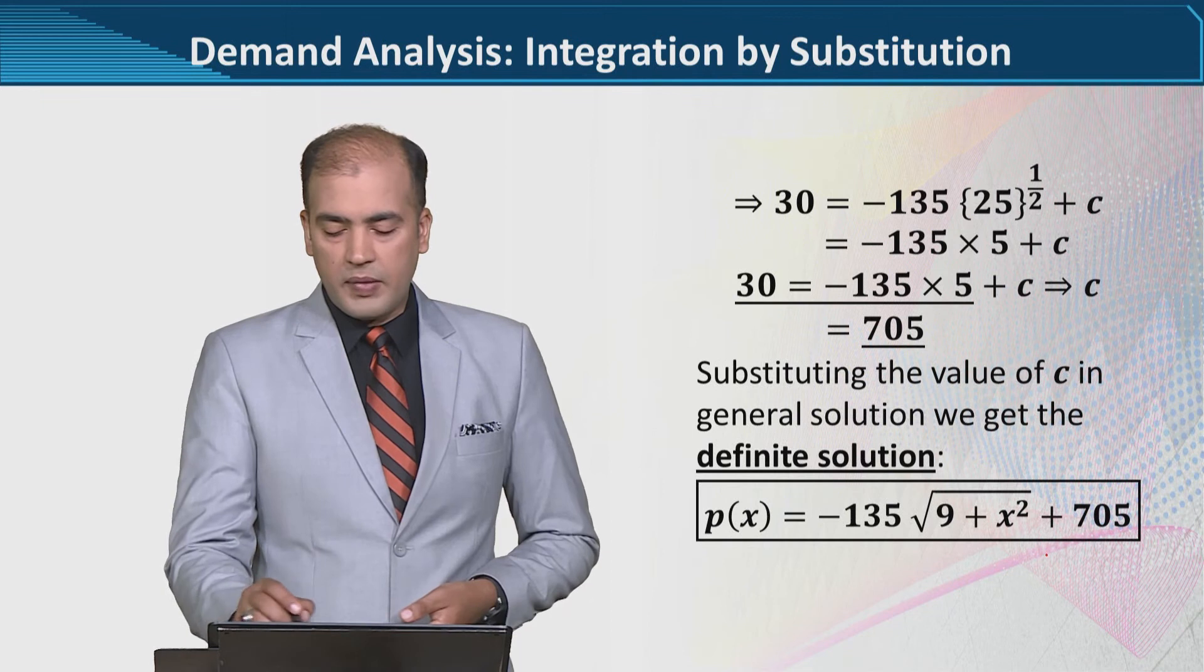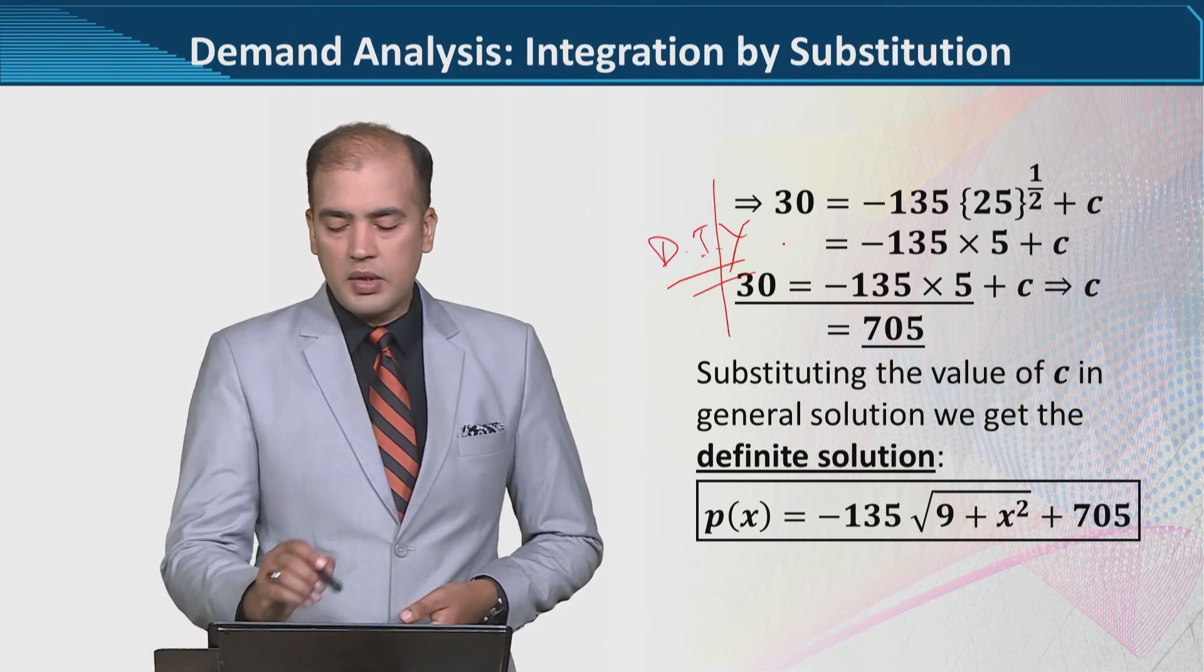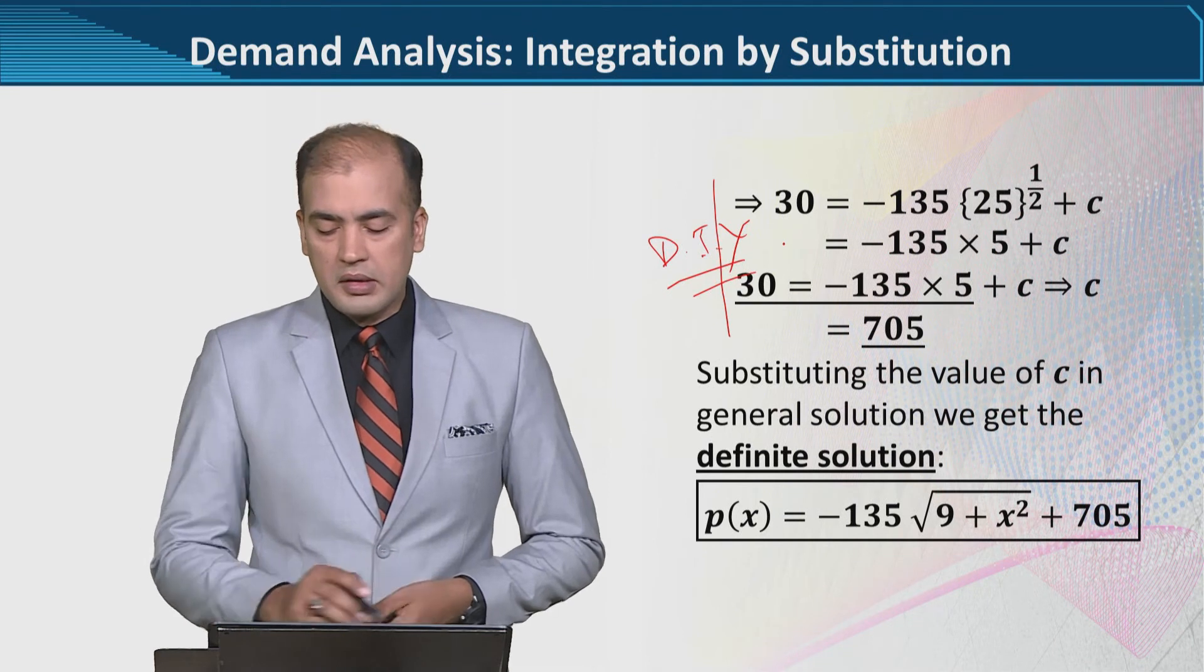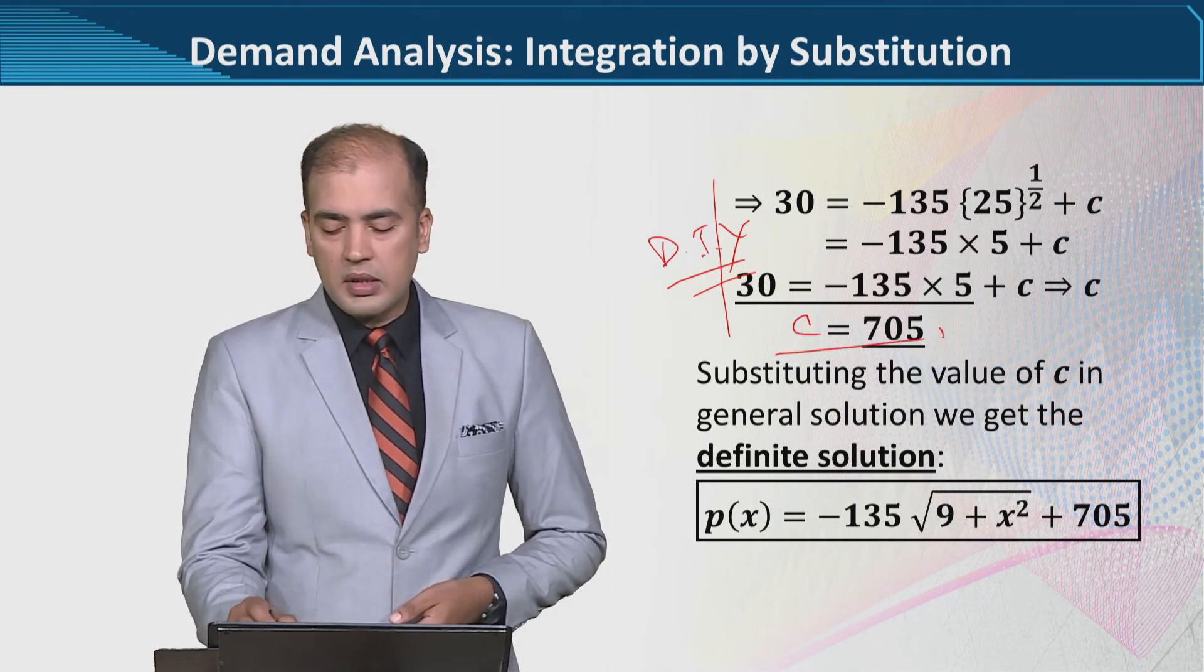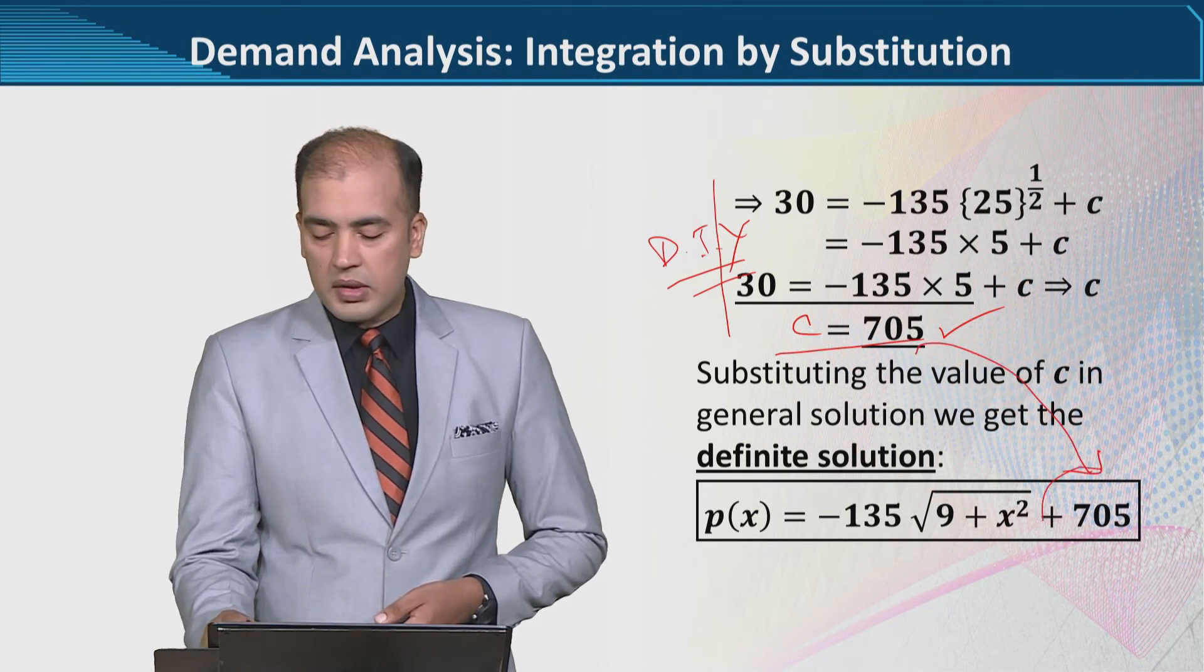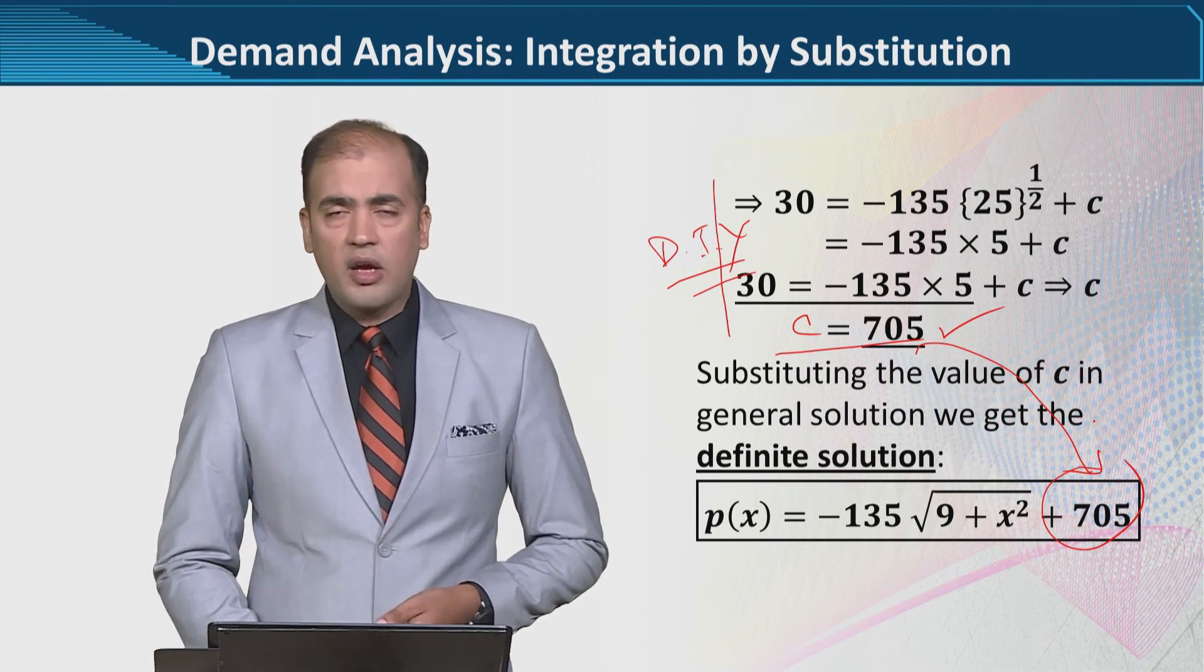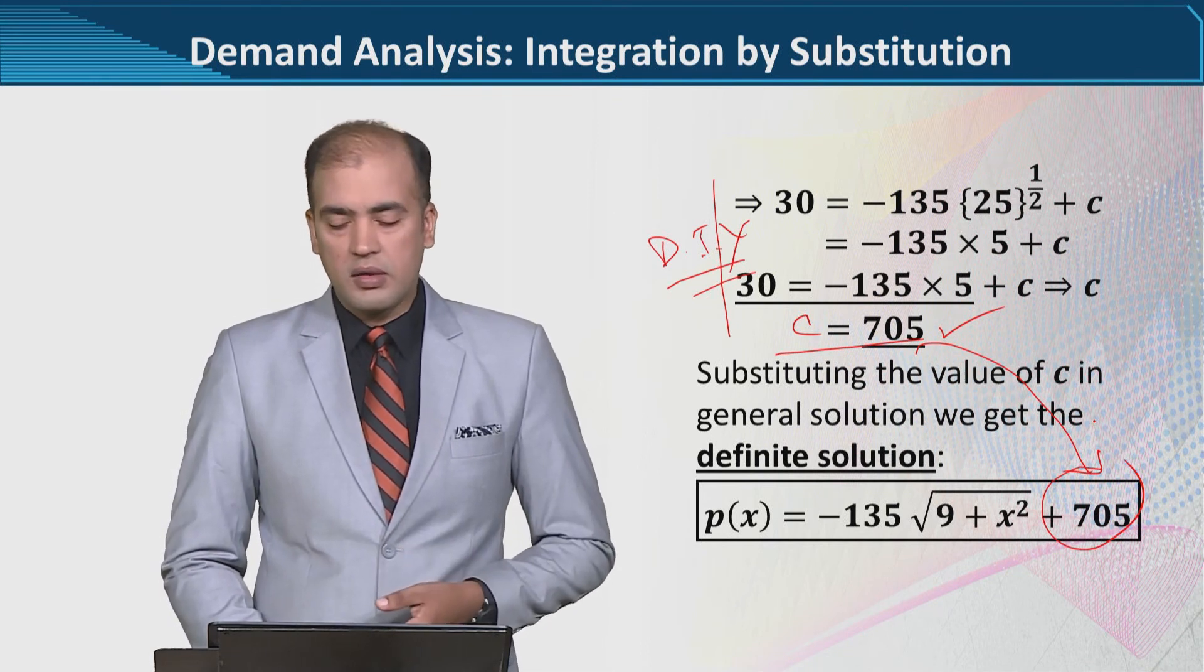Again, this is a brief algebraic process that you can easily do. We get c equals 705. Then we substitute back where the symbol c exists, and finally we got the answer in the definite form, which we can call the definite solution.